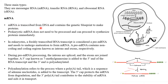mRNA is transcribed from the DNA and contains the genetic blueprint to make proteins — it is the blueprint of proteins. The information is coded on the mRNA so that during translation it is read by the ribosomal RNA and then the protein is synthesized. Prokaryotic mRNA does not need to be processed and can proceed for protein synthesis immediately. You have to mention both the prokaryotic mRNA and the eukaryotic mRNA when writing about this topic.